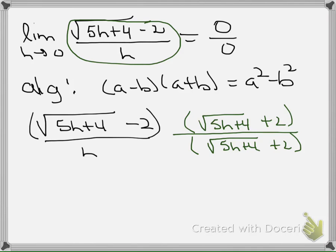Okay, so that's all the same. So looking at this, we see that the consequence of multiplying by the conjugate is that square root of 5h plus 4 minus 2 times the square root of 5h plus 4 plus 2 is going to be a squared. And this is a.